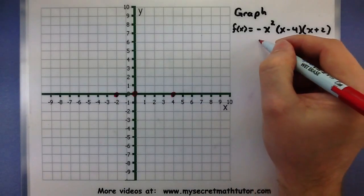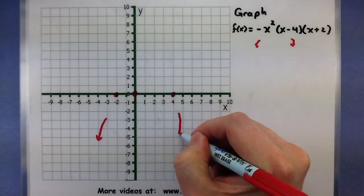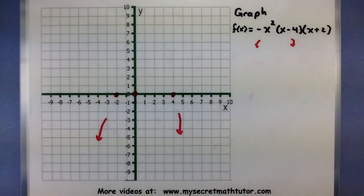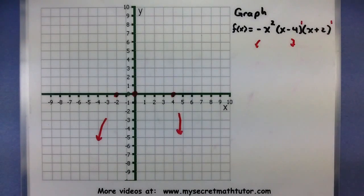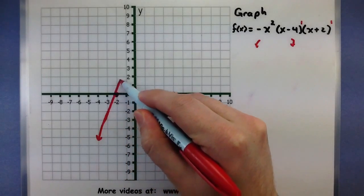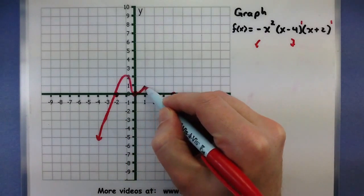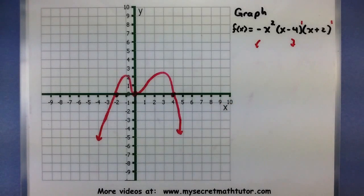From our end behavior, we know that both ends are facing down. So we have down and down. And now we'll just fill in the rest. So for every odd factor, it will go through. For every even factor, it will touch. So it looks like we're going through at negative 2. We're touching at 0. We're going through at 4. Awesome.